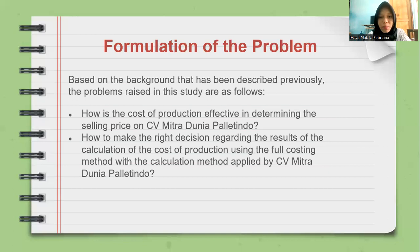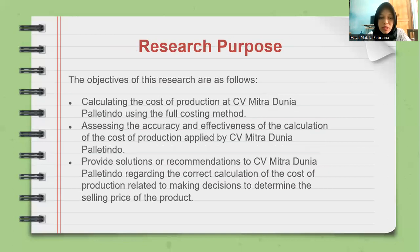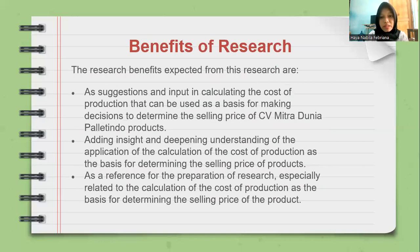The objectives of this research are as follows. The first is calculating the cost of production at CV Mitra Dunia Palitindo using the full costing method. The second is assessing the accuracy and effectiveness of the calculation of the cost of production applied by CV Mitra Dunia Palitindo. The third is to provide solutions or recommendations to CV Mitra Dunia Palitindo regarding the correct calculation of the cost of production, related to making decisions to determine the selling price of the product.